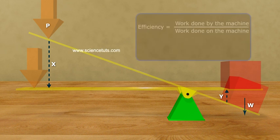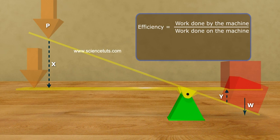Therefore, efficiency is equal to work done by the machine by work done on the machine, is equal to W times Y by P times X.